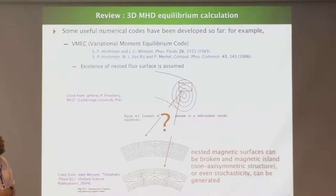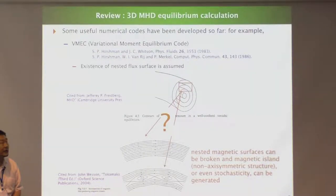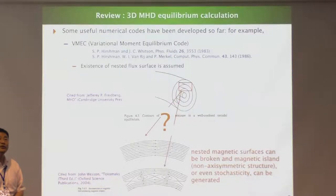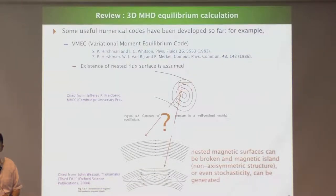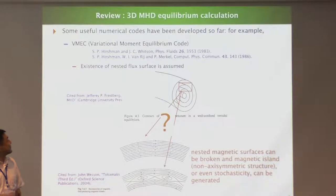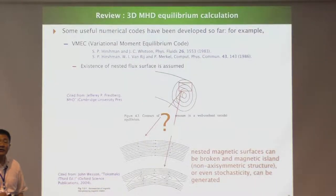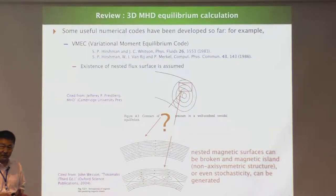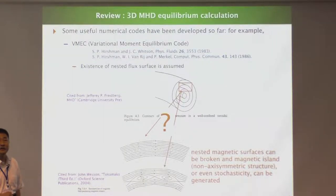In the world there are several famous numerical codes to calculate such an equilibrium, but they all assume something. For example, the VMEC code, which is probably the most-used code in the world, assumes the existence of nested flux surfaces. But nested flux surfaces are guaranteed only for symmetric systems like axisymmetric systems, because in a three-dimensional system, the magnetic field line is not integrable in general, so flux surfaces don't exist in general.